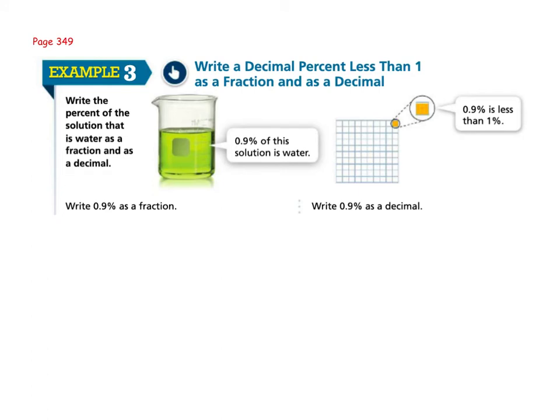In example 3, we have a decimal percent that is less than 1. And again, to write it as a fraction and decimal, since it's already in decimal form, we're going to use the same strategies as example 2. So when we have 0.9 percent, that would be 0.9 out of 100. Then we need to move that decimal point to the right. So we multiply by 10. For each space to move it, you move it by a power of 10. So 10 or 100 if you need to move it two spaces. So now that I multiply by 10, I get 9 over 1,000. And that cannot be simplified, so that is my fraction answer.